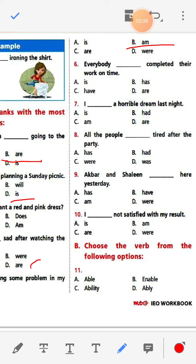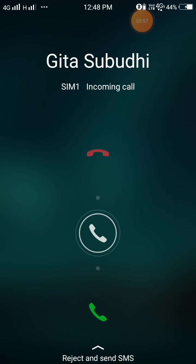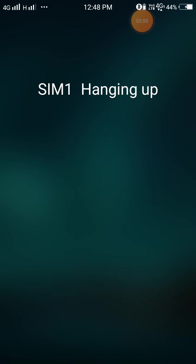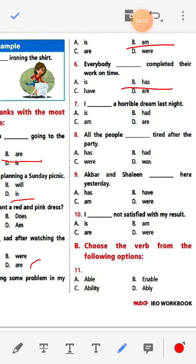Number six: Everybody dash completed their work on time. Options are is, has, have, are. The answer is 'has' because we are talking about another person — Everybody has completed their work on time.